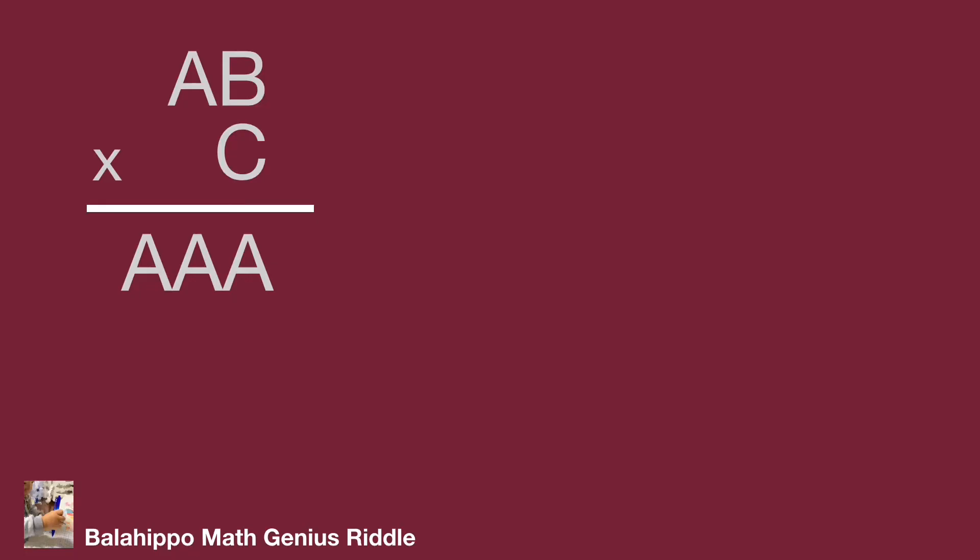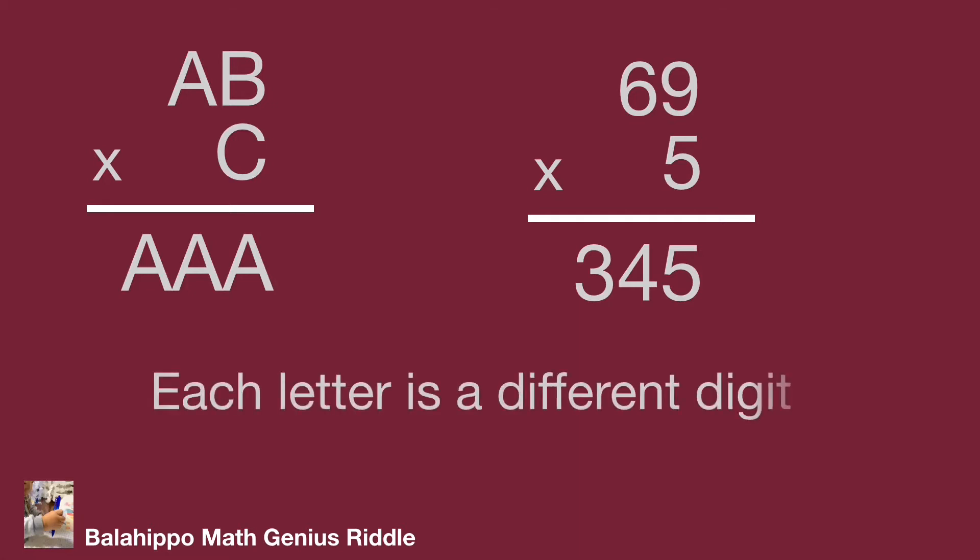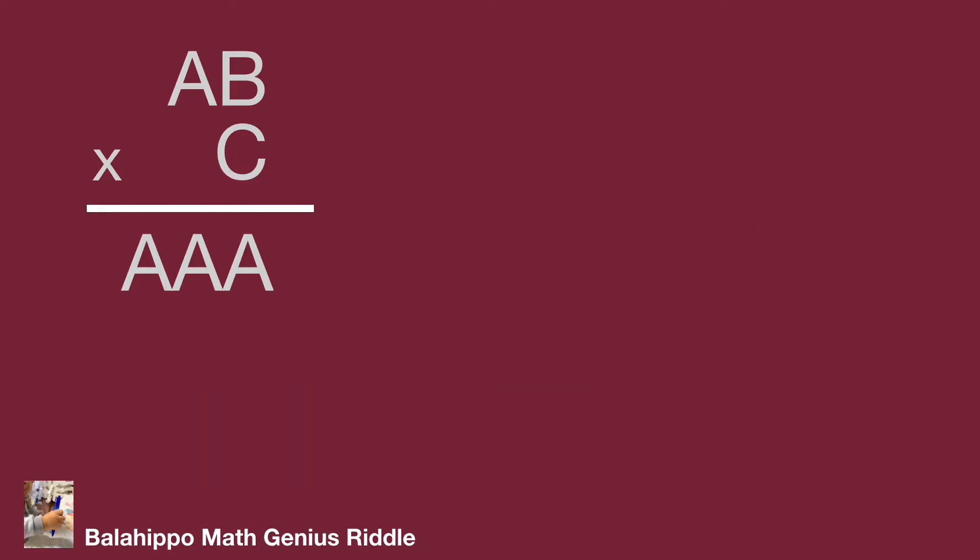The question is AB times C equal to AAA. What it means? Take an example. AB equal to 69 and C equal to 5. 69 multiplied 5 equal to 345. That's the format. But obviously 345 is not equal to AAA. That is not the answer. So the question is ABC each letter is a different digit from 0, 1, 2 to 8, 9 and A not equal to 0. Well, shall we start from this information?